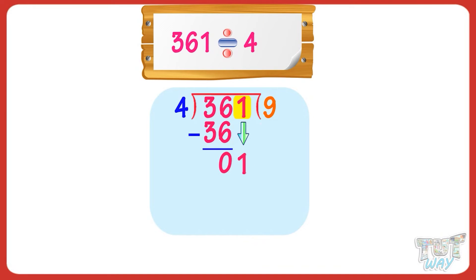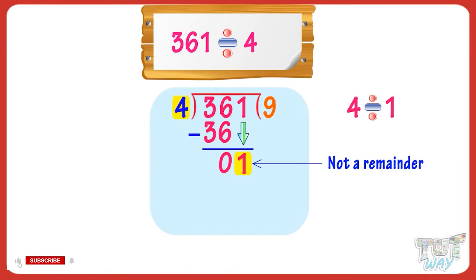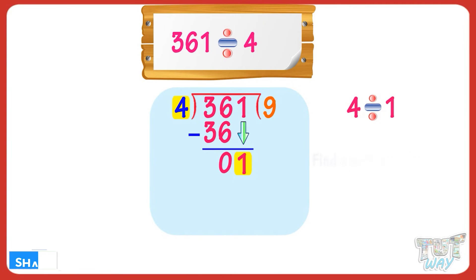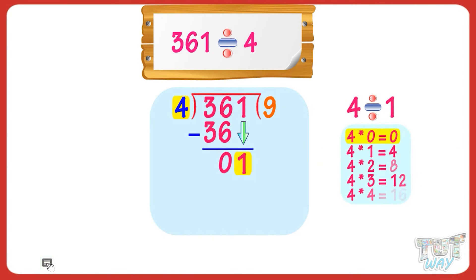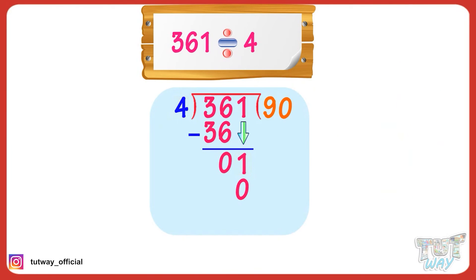Here is something we need to understand. We are left with 1, which is less than the divisor, but it's a digit from the dividend which is yet to be divided. So, it's not a remainder — we have to divide it with 4. What we do is, we find a multiple of 4 which is less than 1. That is, 4 multiplied by 0 equals 0. So, write 0 below 1 and 0 in the quotient. Now, our quotient is 90 and remainder is 1.